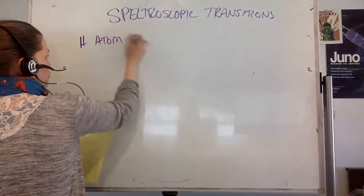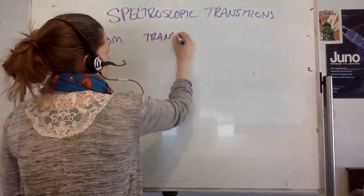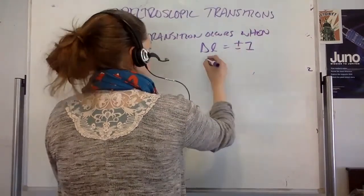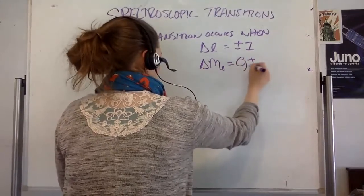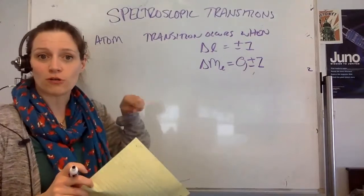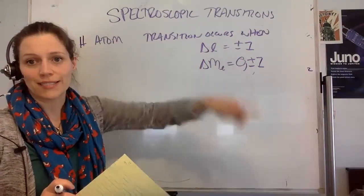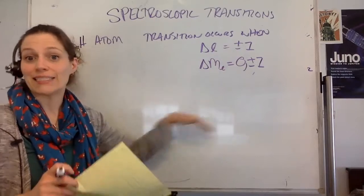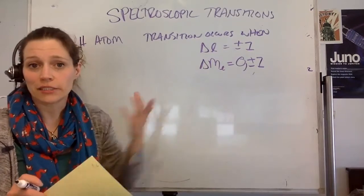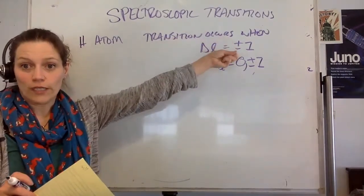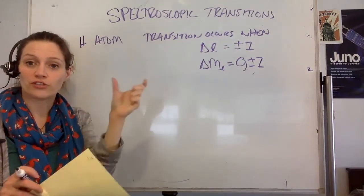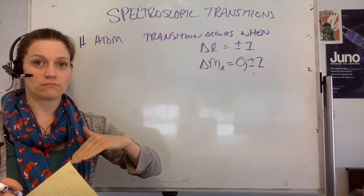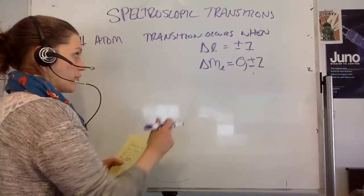For the hydrogen atom, the transition occurs when ΔL equals plus or minus one, and ΔM sub L equals zero or plus or minus one. So you can't have an electron in the d orbital (L=2) go to the s orbital (L=0). It has to be s to p or p to d. You can't have s to s, because there's no angular momentum in an s orbital (L=0), and there's no change in angular momentum by integer value one. Photons have integer value one changes in angular momentum, so you have to have integer value changes. These are called selection rules.